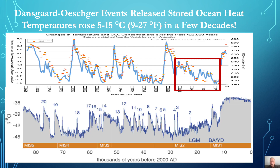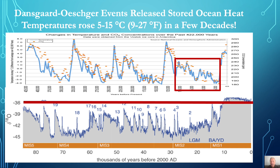A closer look at that glacial period reveals over 20 rapid-warming Dansgaard-Oeschger events, during which temperature rose by an incredible 5 to 15 degrees centigrade, or 9 to 27 Fahrenheit, in just a few decades. And despite a heavily glaciated northern hemisphere, temperatures were almost as warm as the final warm event that led to the present warm interglacial.